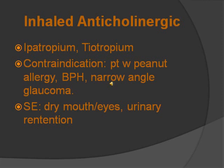Inhaled anticholinergics are muscarinic receptor blockers that cause bronchodilation. Medications in this class include ipratropium and tiotropium — they both end in '-tropium.' You should not use this for bronchospasms, only to prevent them. Contraindicated in patients with peanut allergies, BPH, and narrow-angle glaucoma. Side effects include dry mouth, dry eyes, and urinary retention. A mnemonic for anticholinergic side effects: can't see (blurred vision), can't pee (urinary retention), can't spit (dry mouth), and can't shit (constipation). The patient should know it could take up to two weeks to see the full effect. Shake the inhaler before use, and if using two medications, wait five minutes between each one.